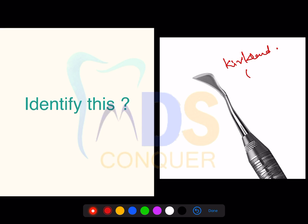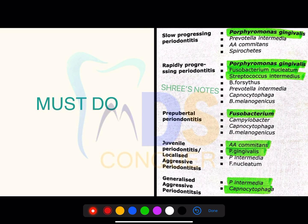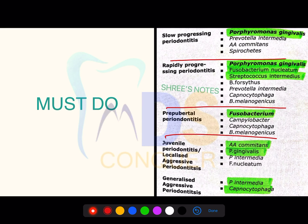The Kirkland knife is useful for gingivectomy. The normal radius of action is 1.5 to 2 millimeters; sometimes it goes beyond 2.5 millimeters. Larger defects beyond 2.5 millimeters are seen in two conditions: localized juvenile periodontitis and Papillon-Lefèvre syndrome.